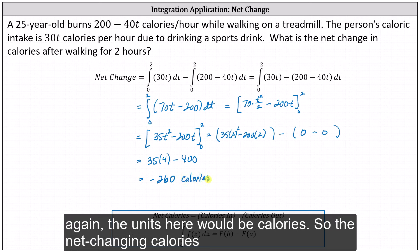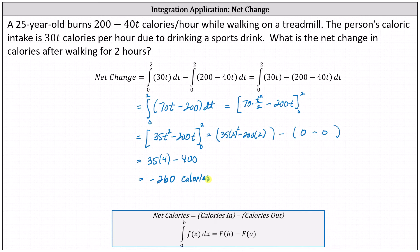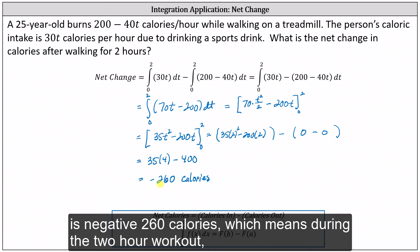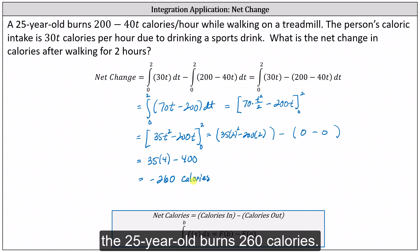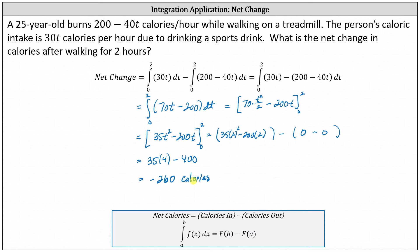So the net change in calories is negative 260 calories, which means during the two-hour workout, the 25-year-old burns 260 calories. I hope you found this helpful.